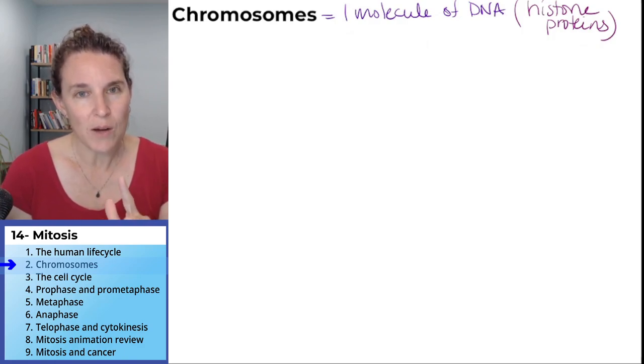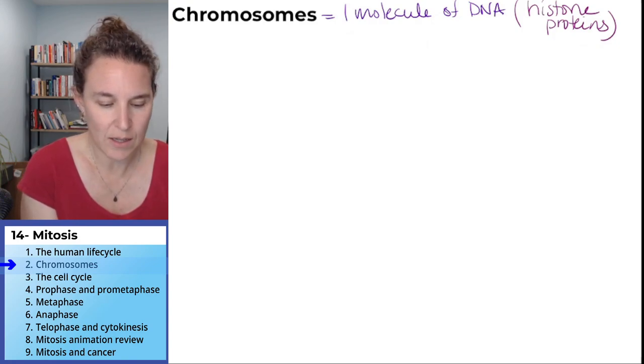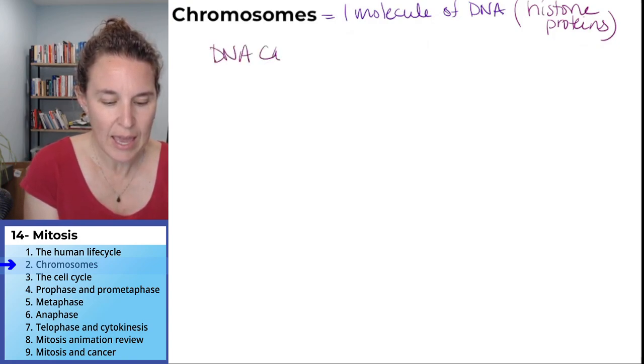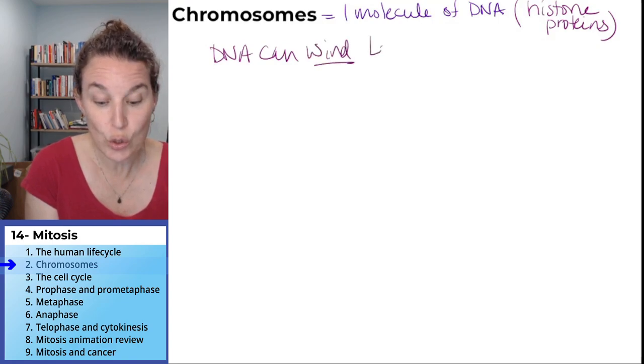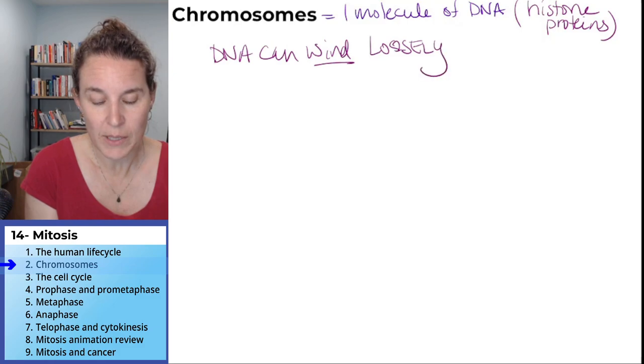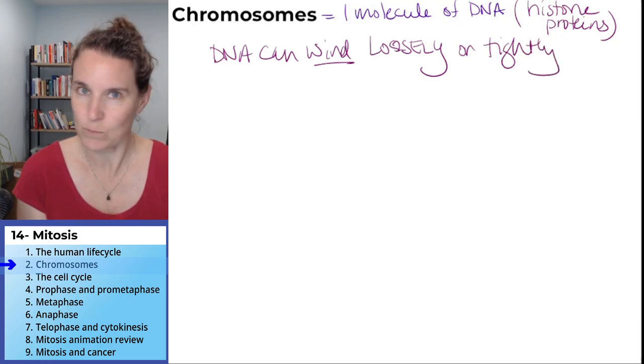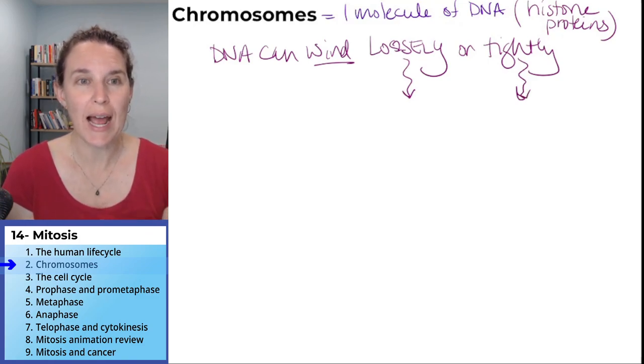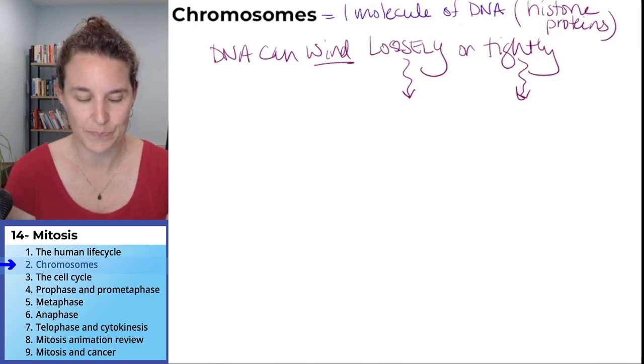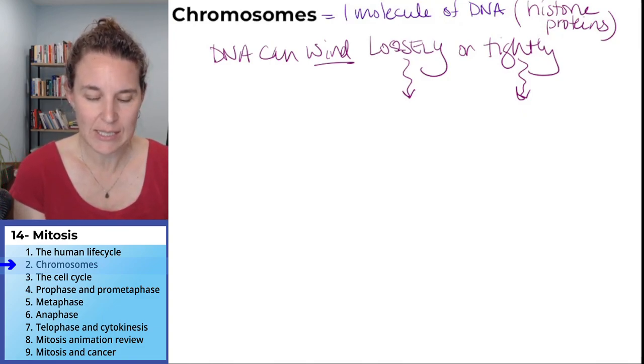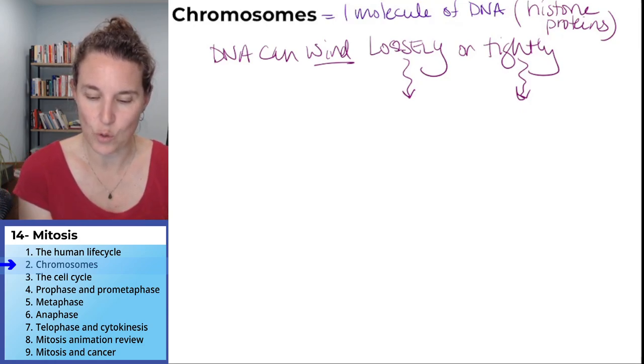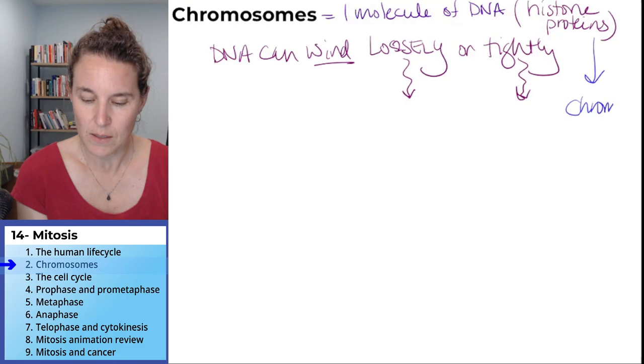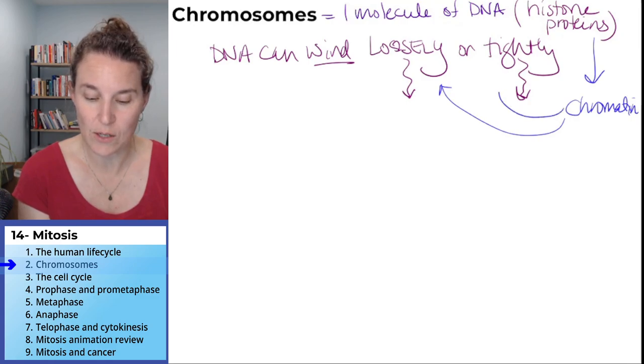While we're talking about the histone proteins, the DNA can wind loosely or tightly. And if it is loosely wound, it actually can end up looking like a tangle. The DNA plus the histone protein is called chromatin. And so you can have loosely wound chromatin or tightly wound chromatin.